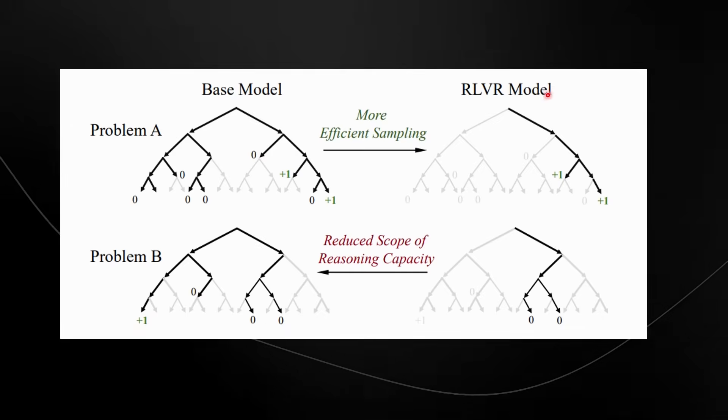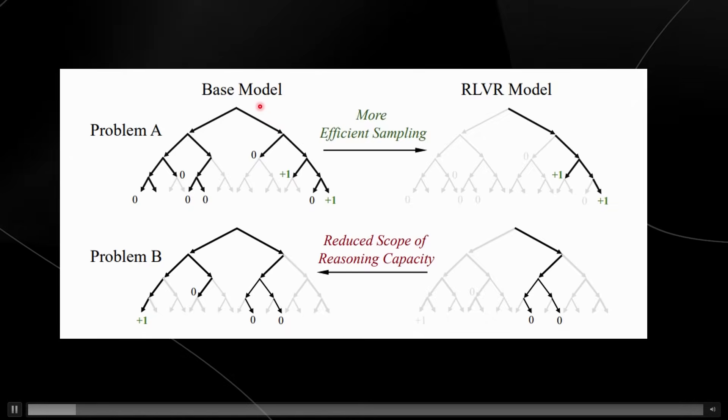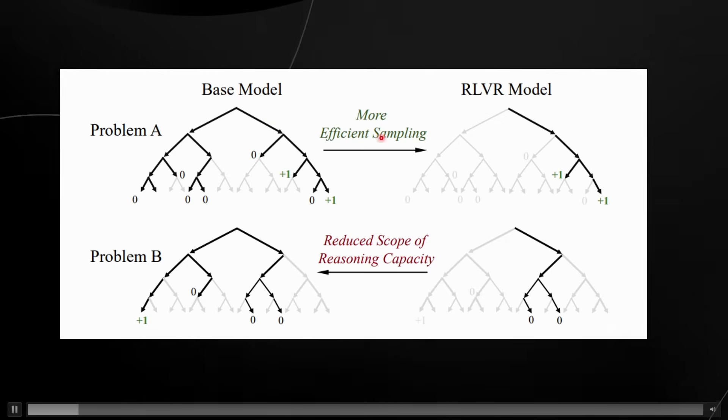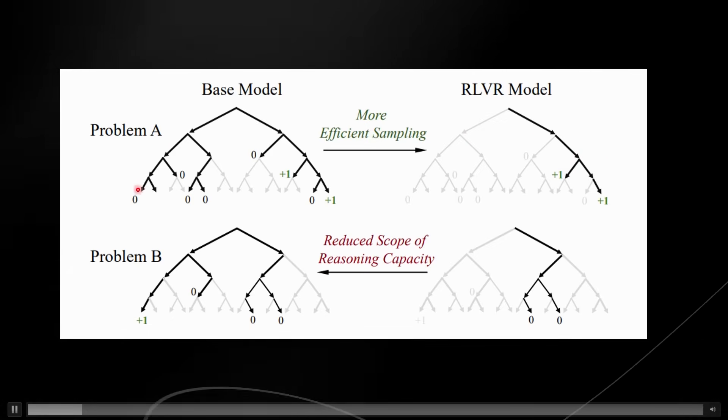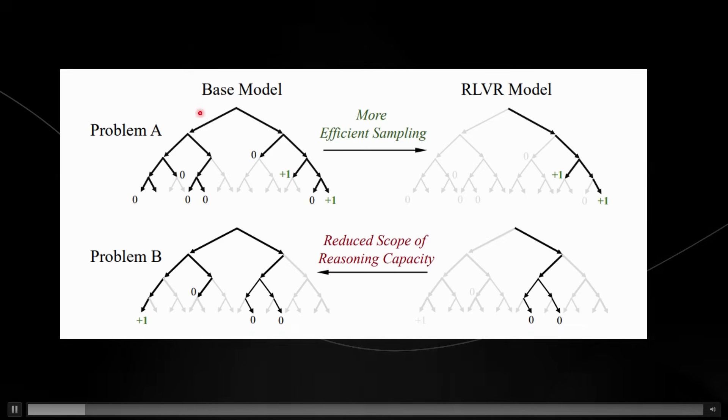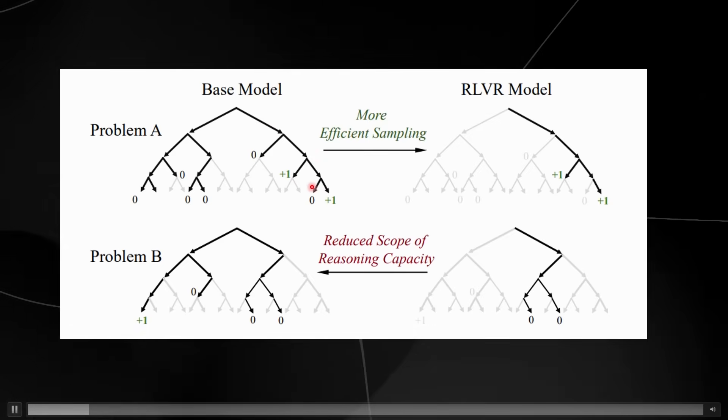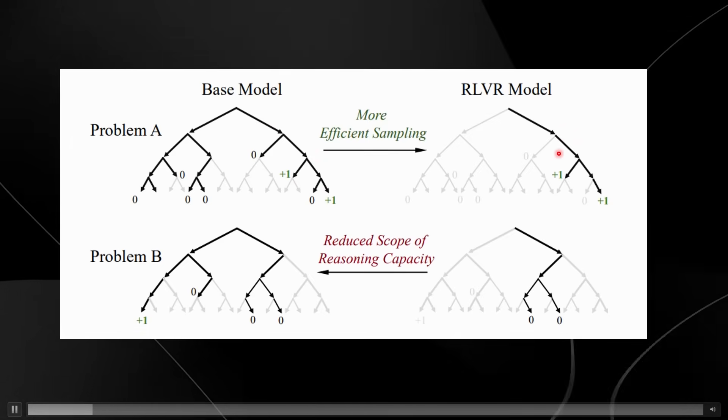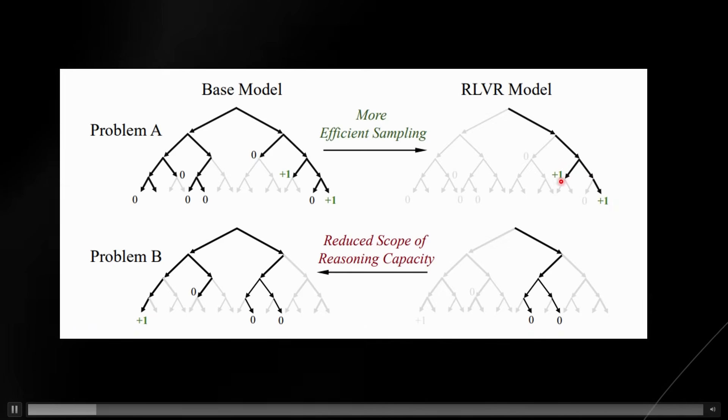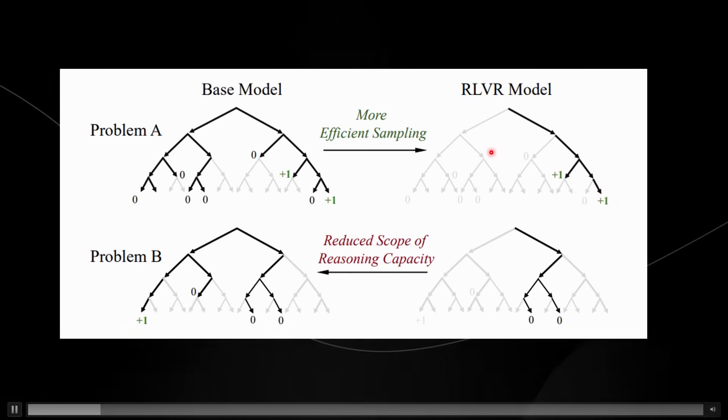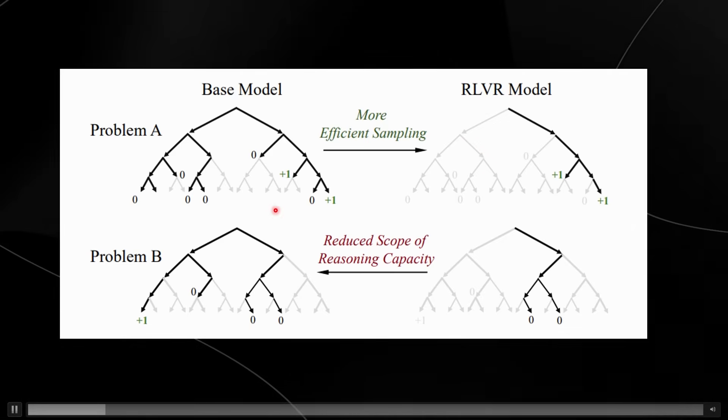The base model is the one on the left, which is the original untrained version. The one on the right is the same model trained with reinforcement learning that rewards correct answers. Now we have the top row, which is the more efficient sampling. This is where the base model explores many paths but it's actually slower to land on the right one. You can see it goes down here to zero zero zero, it goes down these trees and eventually it gets to the plus one, which is the correct one. Whereas with the reinforcement learning model, it has already learned to aim for the path that gives rewards, so it finds correct answers faster.